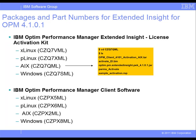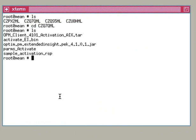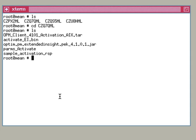In this example, we are showing the contents of these packages for the AIX platform on which we are going to install. Now let's walk through the installation process of the Optum Performance Manager Extended Insight feature. Because we will use a graphical user interface for the installation, we need X Windows Server Software on the server and X Client Software on Windows to connect to the server.